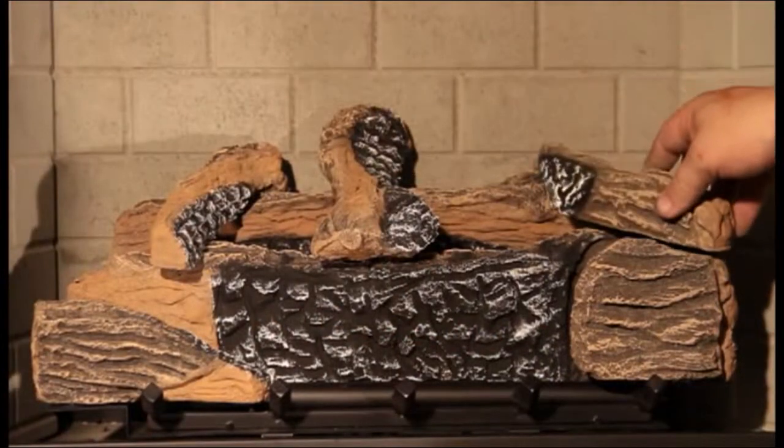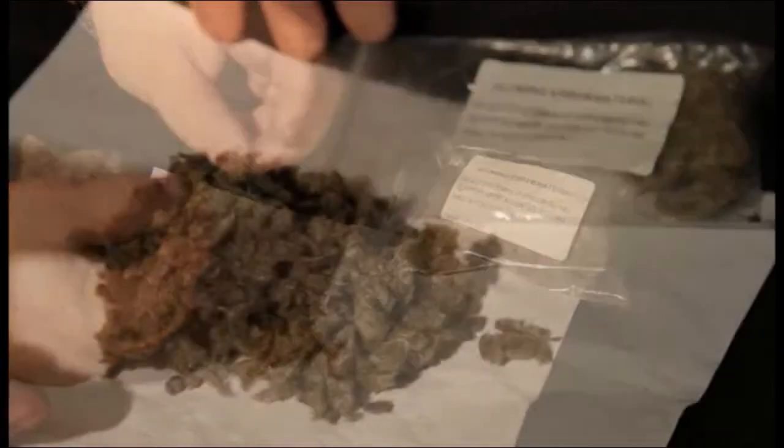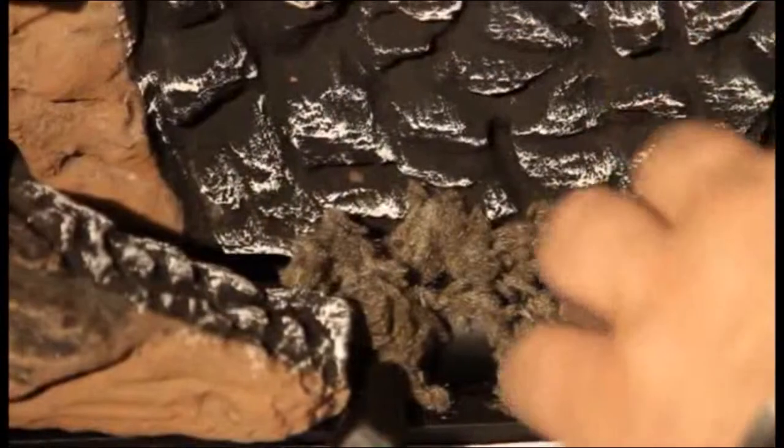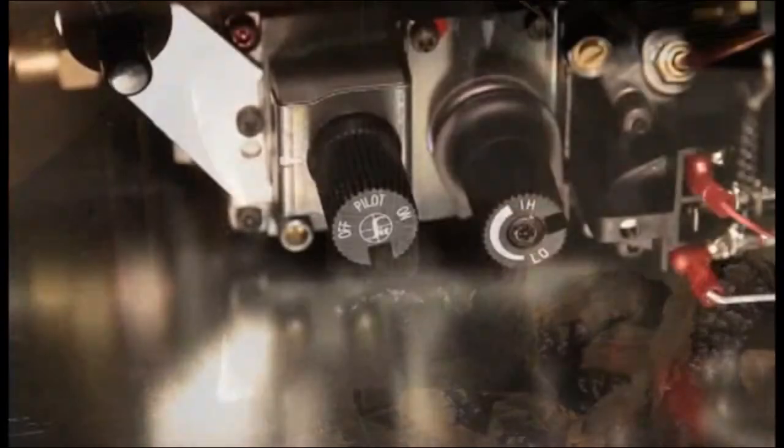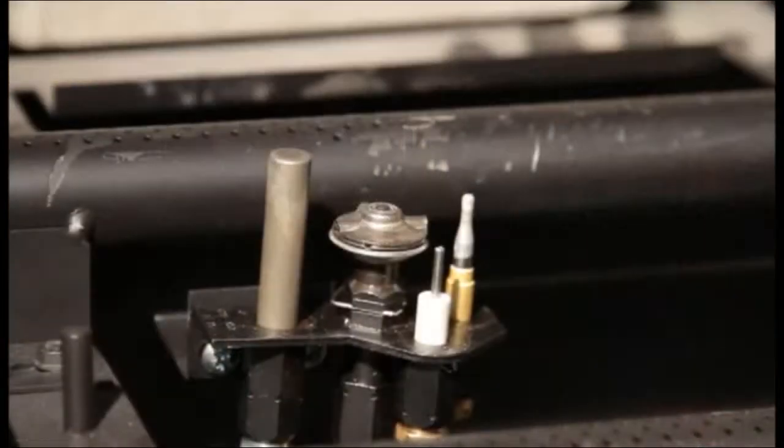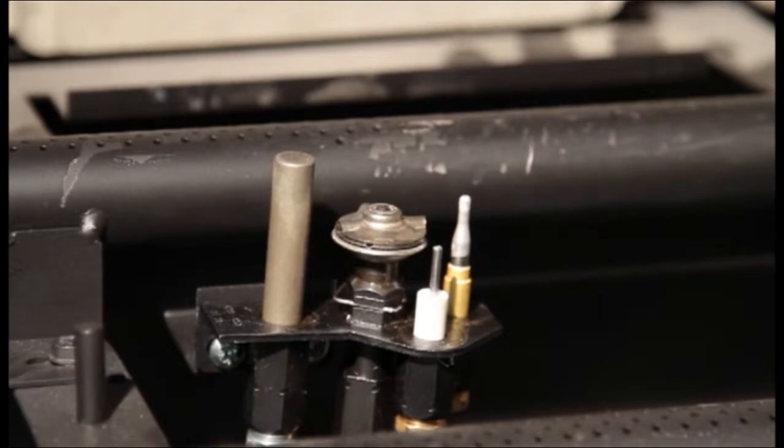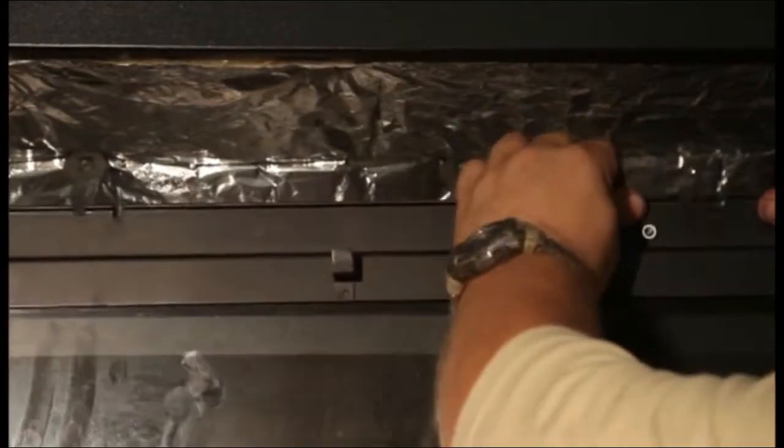Install the logs and embers, which must be no larger than an eraser, according to the installation instructions. Leak check the gas control and any connections you've made before operating the appliance. Close and latch the door, latching the top two latches first.